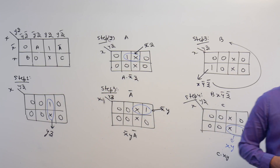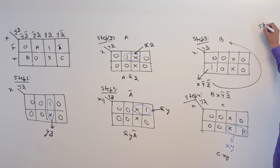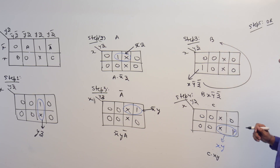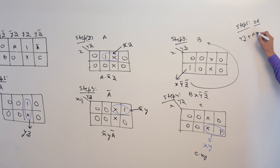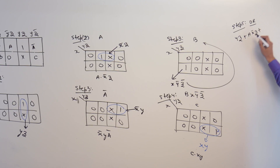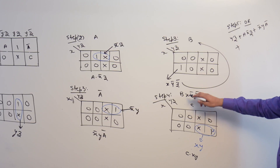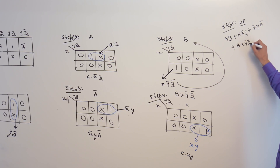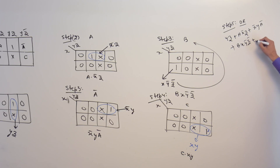So we took all the variables and tried to find the SOP expression we can get. The last step — step 5 — is to take the OR of all these expressions. The first expression is yz, next is a dot x complement dot z, next is x complement dot y dot a complement, next is b dot x dot y complement dot z complement, and the next is plus c dot x dot y.